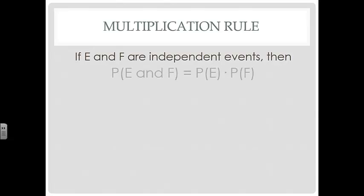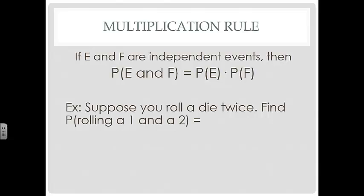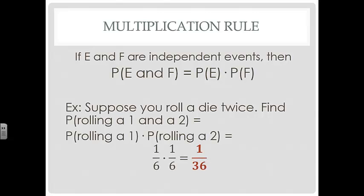All right, so let's take a look at the multiplication rule. If E and F are independent events, then the probability of E and F is equal to the probability of E times the probability of F. So suppose you roll a die twice. Find the probability of rolling a 1 and a 2. Well, the probability of rolling a 1 is 1 out of 6, and the probability of rolling a 2 is 1 out of 6. So the probability of rolling a 1 and a 2 is 1 out of 36.